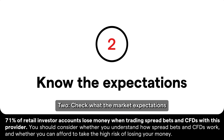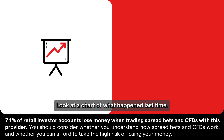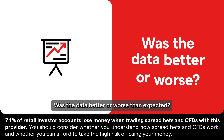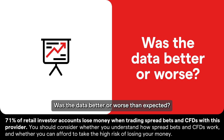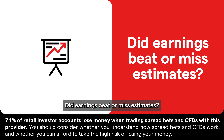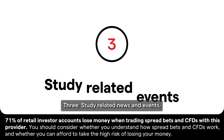2. Check what the market expectations are for the event. Look at a chart of what happened last time. How did the market react? Was the data better or worse than expected? Did earnings beat or miss estimates? Use what happened in the past to inform your future trades.